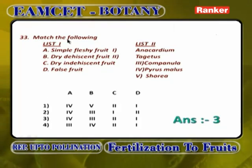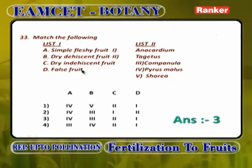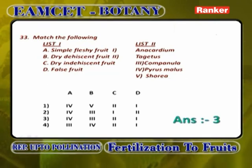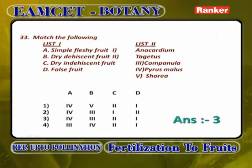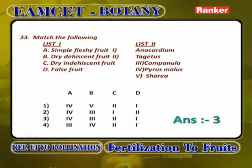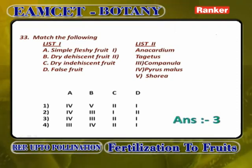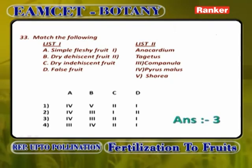Matching fruit types: Simple fleshy fruit — Pyrus malus, A is 4. Dry dehiscent fruit — Campanula, B is 3 (Campanula shows porous capsule). Dry dehiscent fruit — Tagetes, C is 2 (Tagetes petula shows cypsela, dry dehiscent). False fruit — Anacardium, D is 1. Answer: A4, B3, C2, D1.